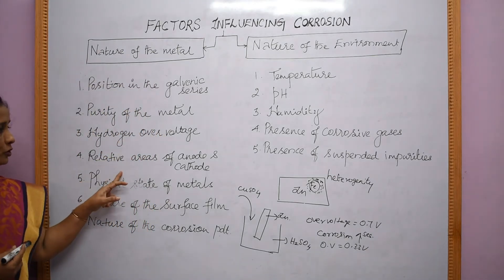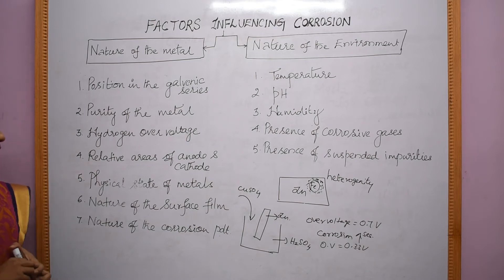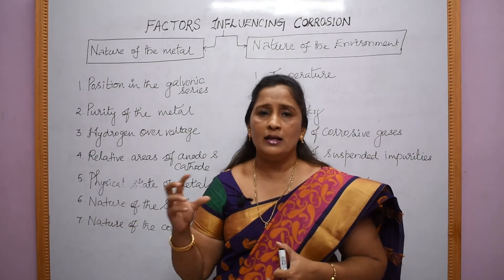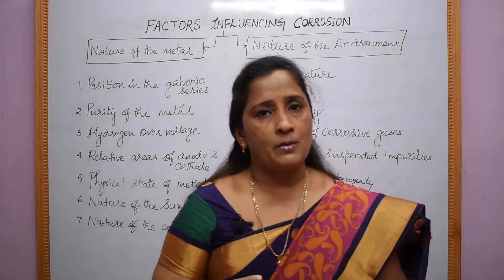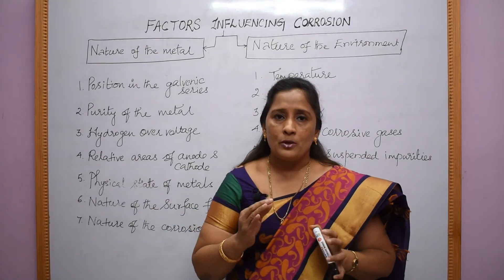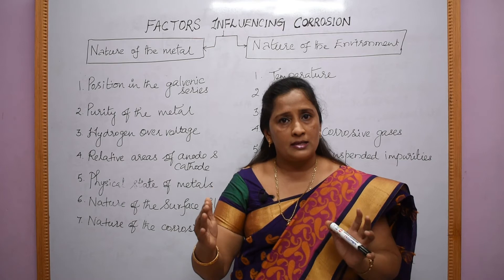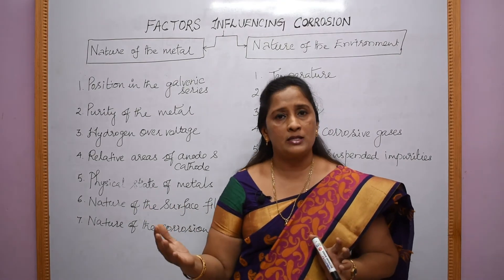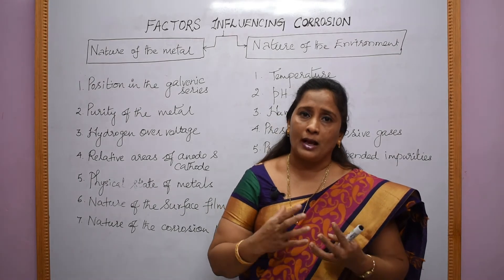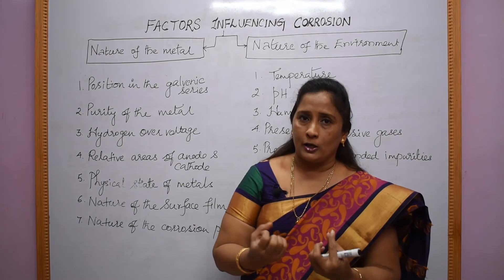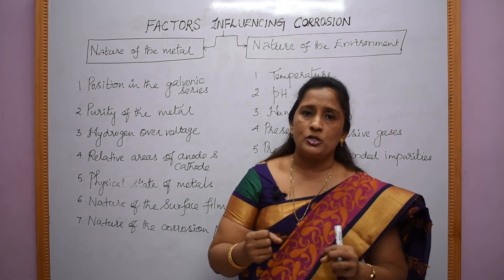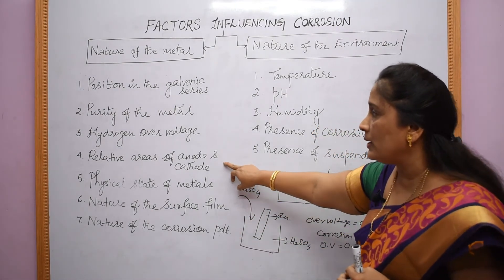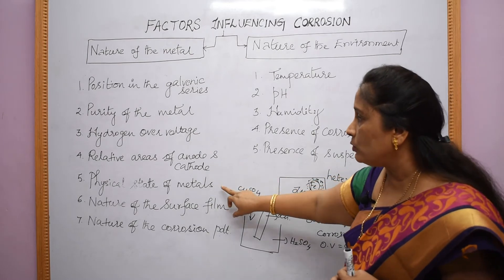The fourth point is relative areas of anode and cathode, which we have discussed in previous videos. The rate of corrosion depends upon the relative areas of anode and cathode. If the cathodic region has more surface area, corrosion is found to be more. This is because a larger cathodic region has more tendency to gain electrons, which compels the anodic region to give up electrons. Therefore, when the cathodic area is more, the rate of corrosion is more.